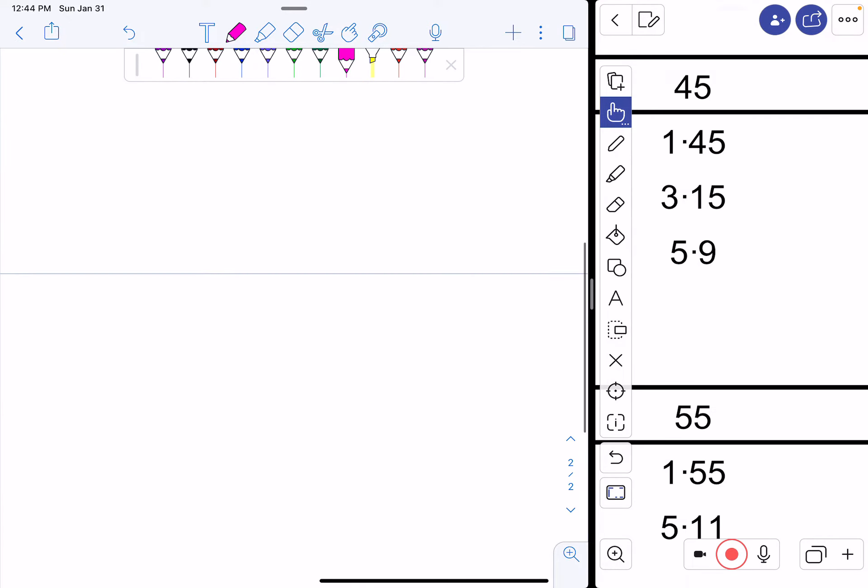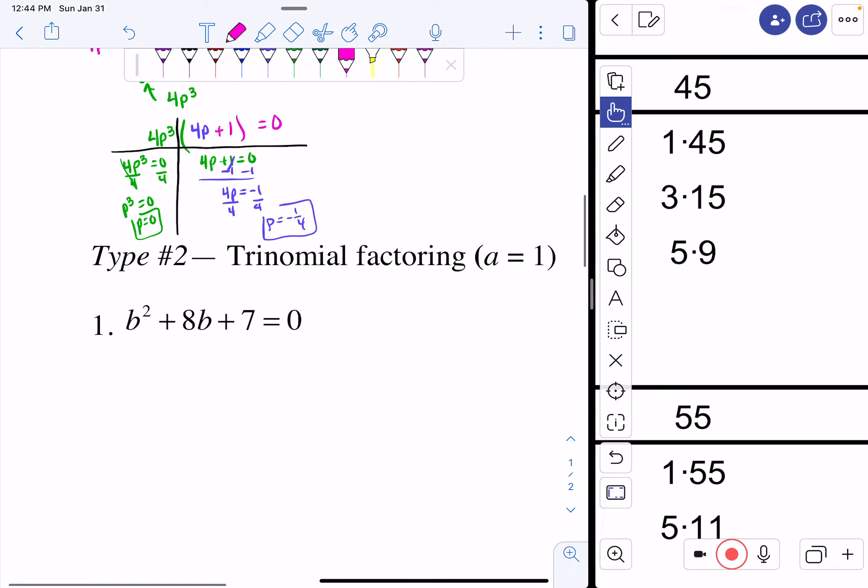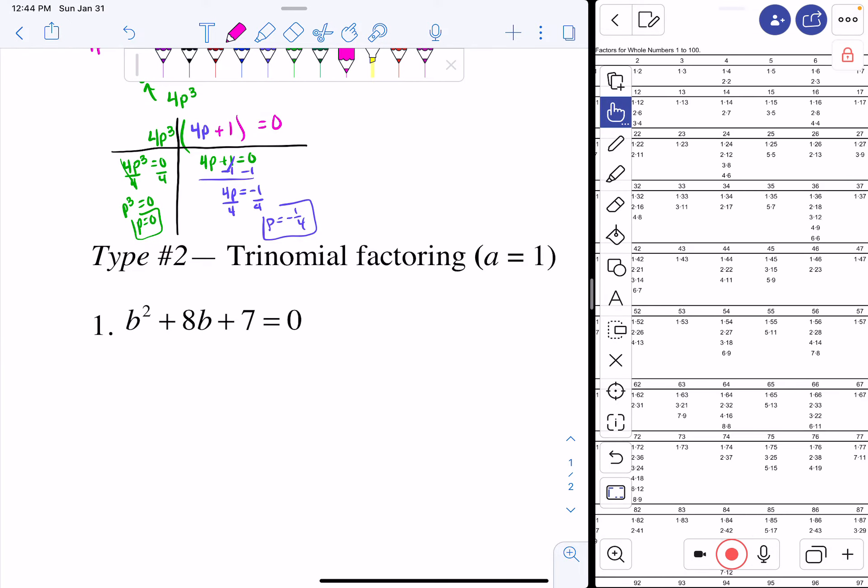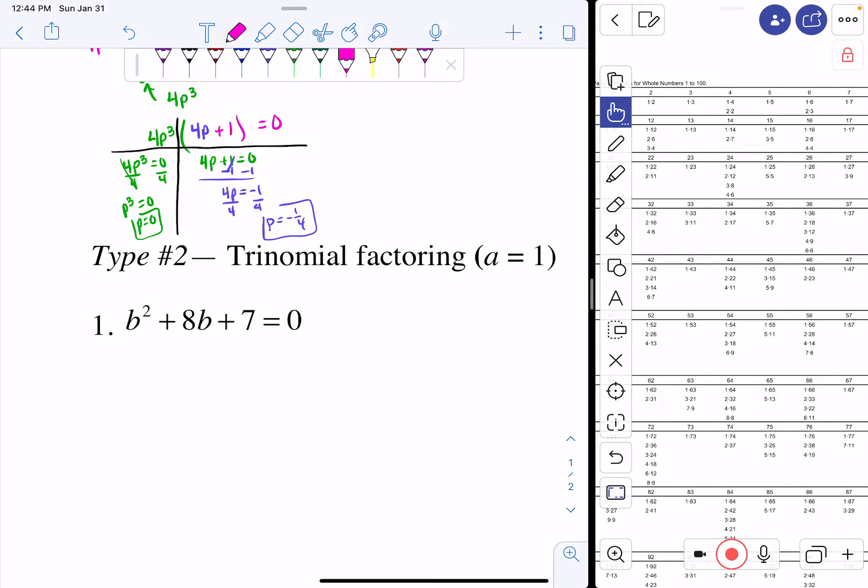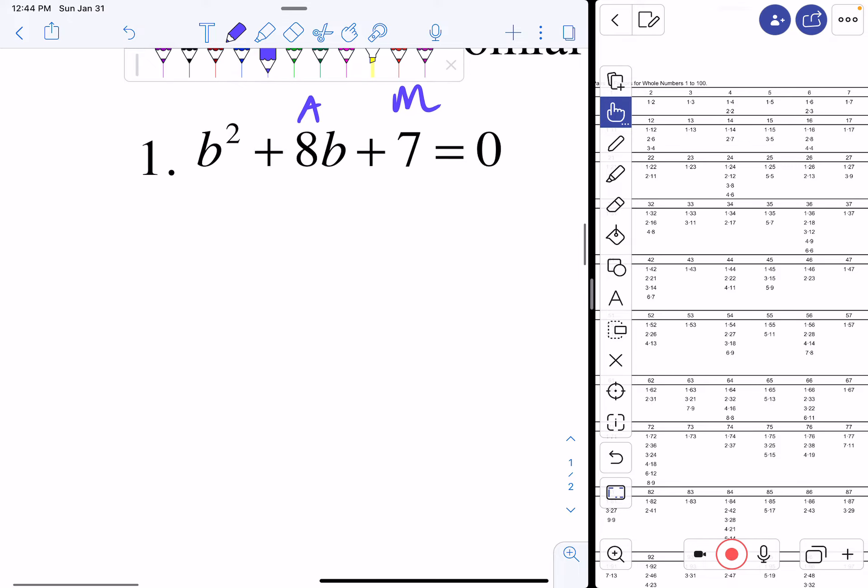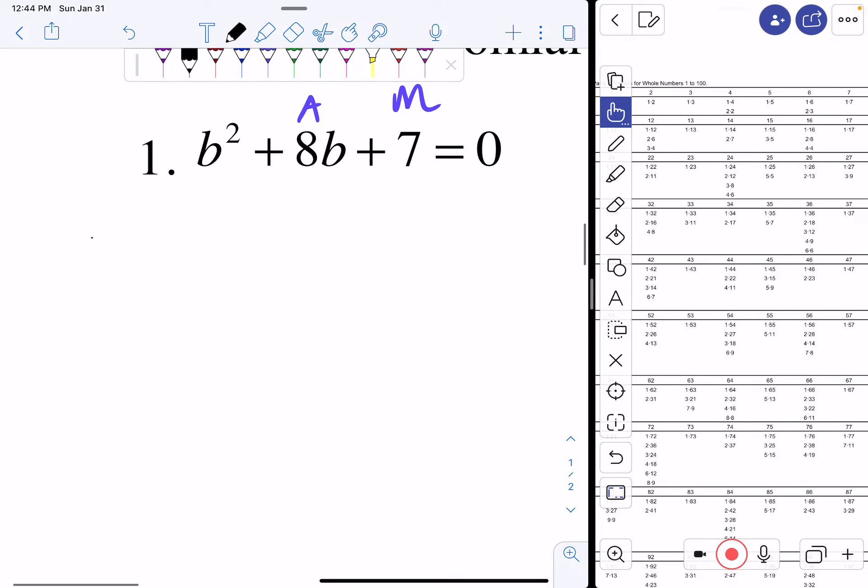Now let's go on to trinomial factoring where a equals 1. So this is actually a relatively quick procedure. It relies on our factor pairs from 1 to 100. And what I recommend is you always put an a over what you want to add to and an m over what you want to multiply to. So in this case, I want to multiply to a 7 and add up to an 8.